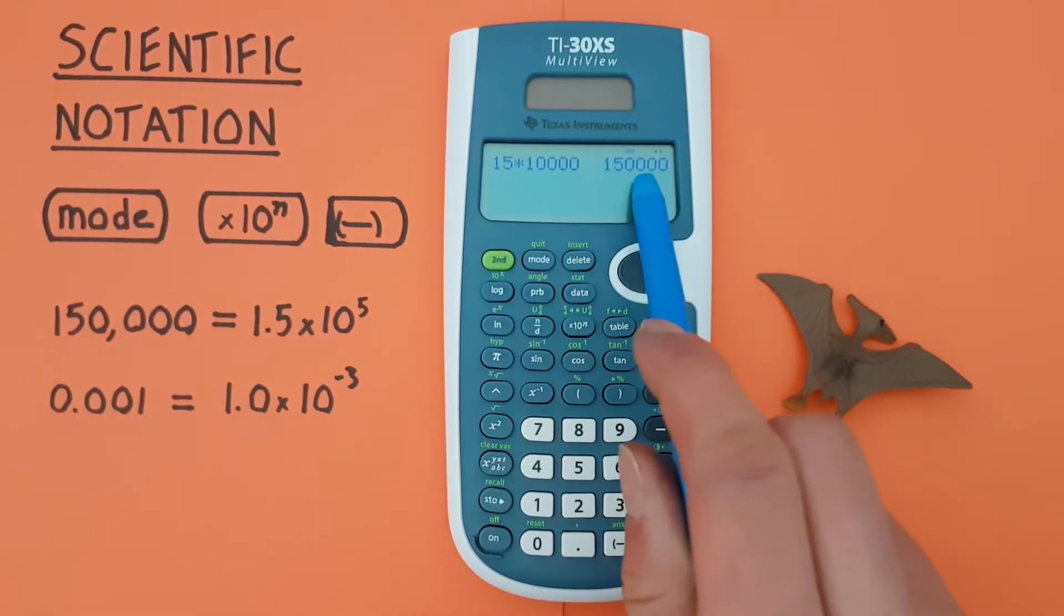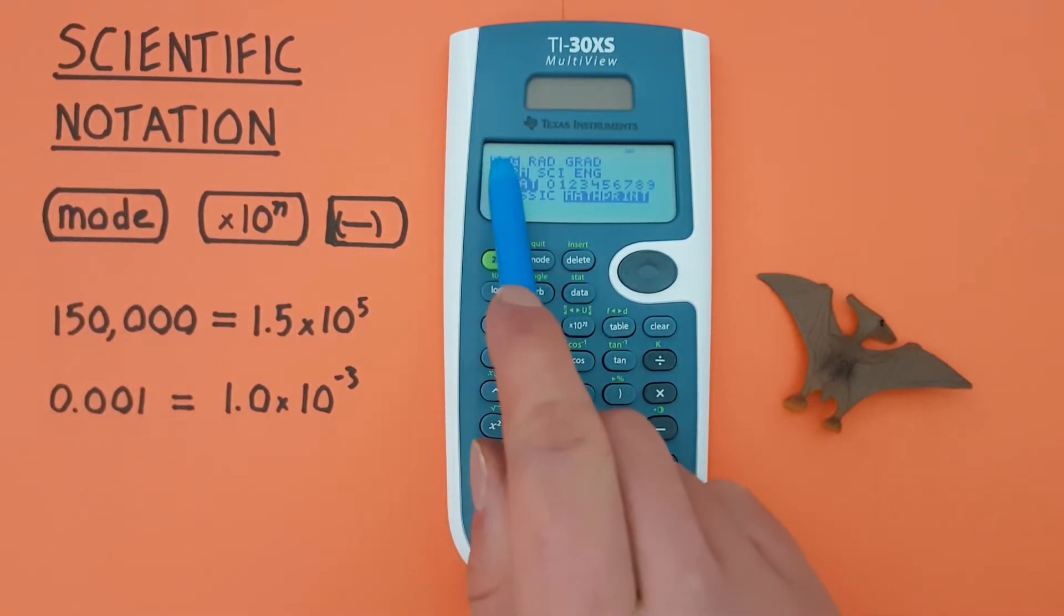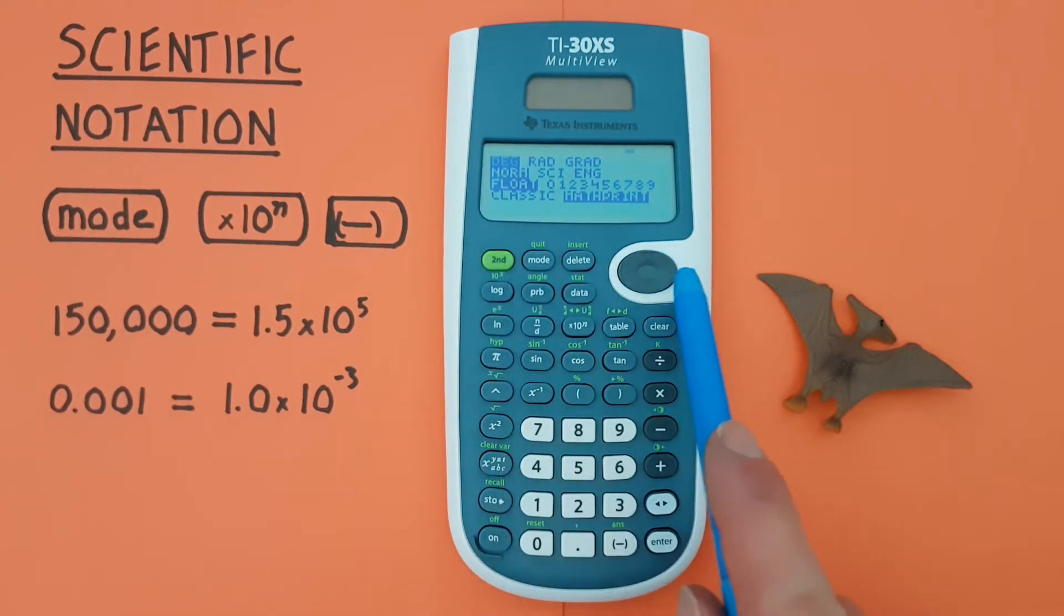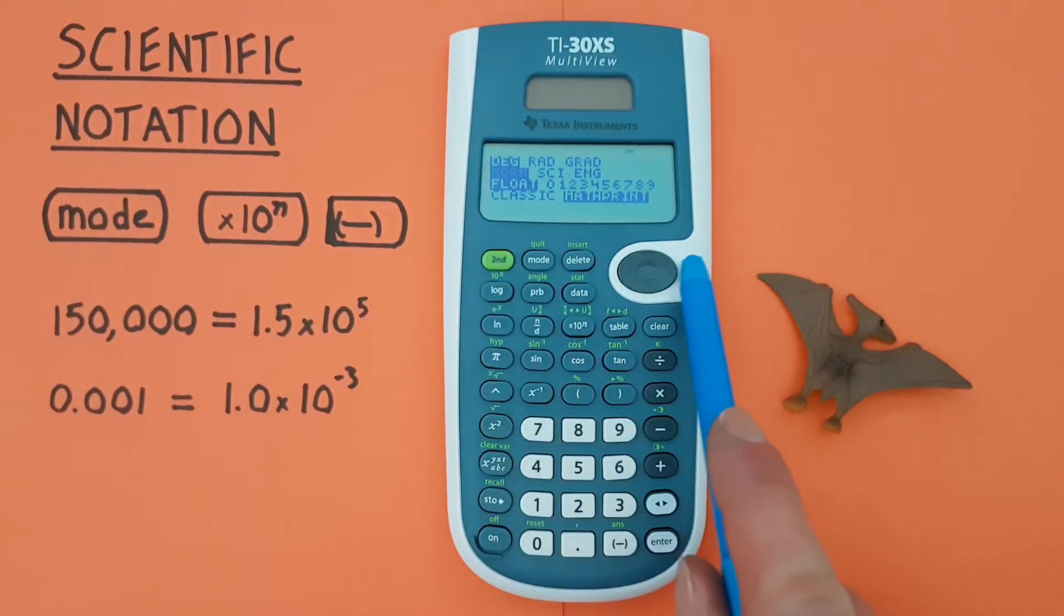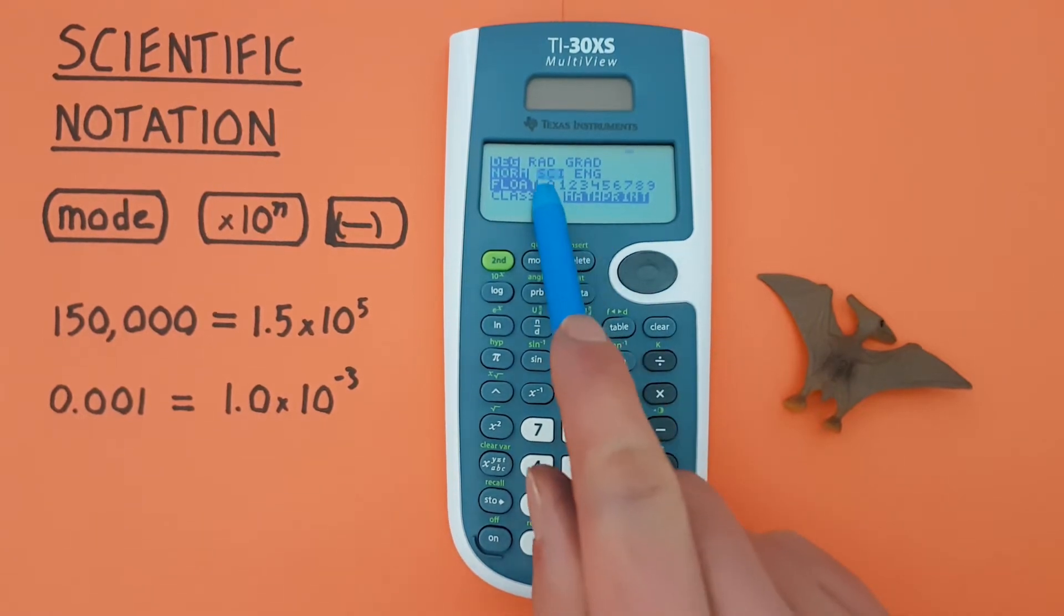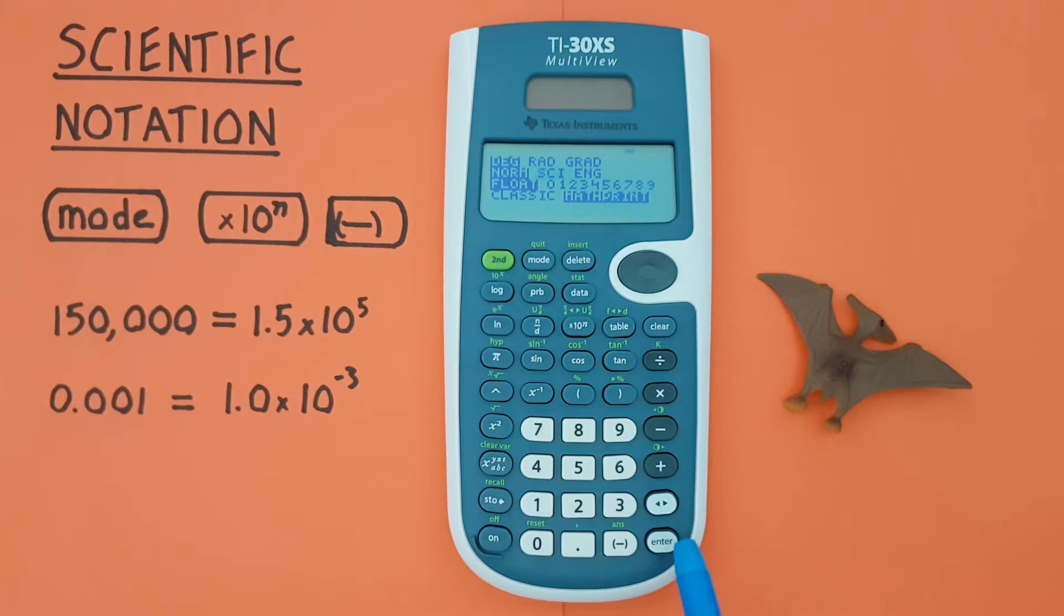Well this gives us 150,000 and if we wanted to convert that to scientific notation we would turn our calculator into scientific notation mode. So to do that we press mode and here we see on our second option if we scroll down we're in norm mode but if we scroll to the right once there's SCI or scientific notation mode. So we press enter to highlight that and then press clear.